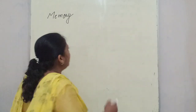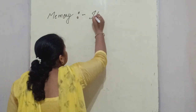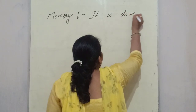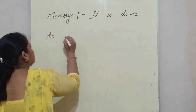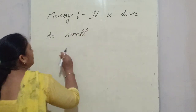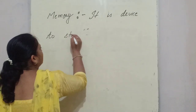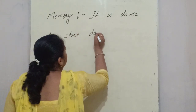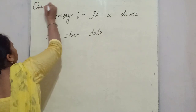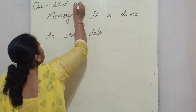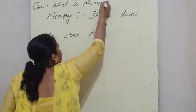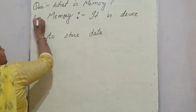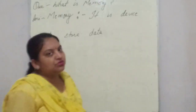Memory is a device — or we can say it is a tangible component or physical component — to store data. So what you will write in computer, in simple words: memory is a device to store data.